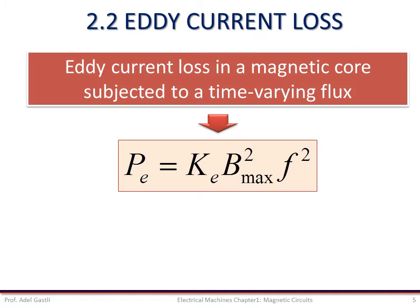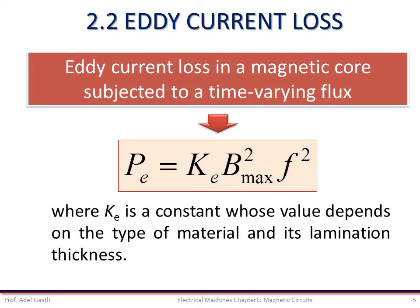The eddy current loss in the magnetic core subjected to a time-varying flux is equal to Ke multiplied by the square of the maximum flux density multiplied by the square of the frequency of variation of the current, where Ke is a constant whose value depends on the type of material and its lamination thickness. The lamination thickness varies from 0.5 to 5 mm in electrical machines and from 0.01 to 5 mm in devices used in electronic circuits operating at higher frequencies.